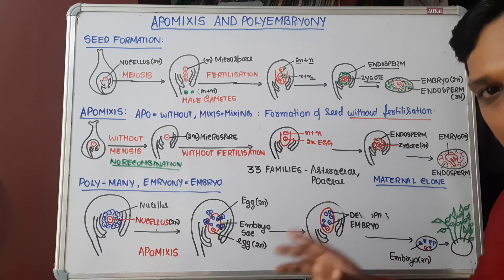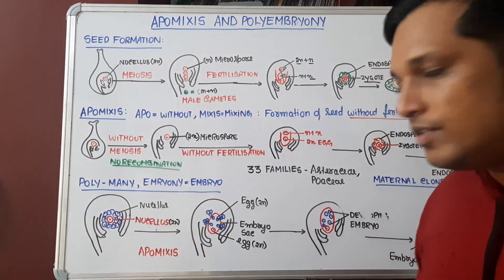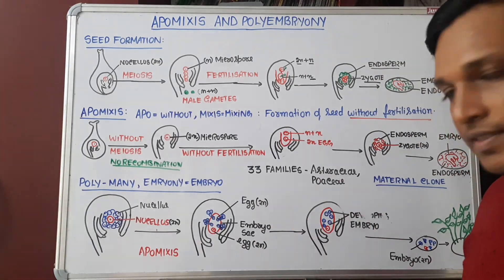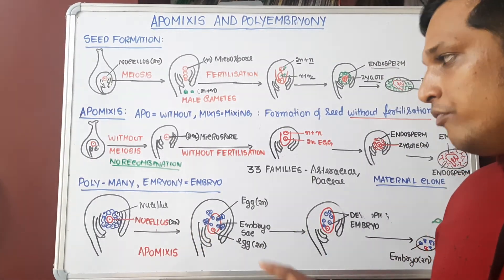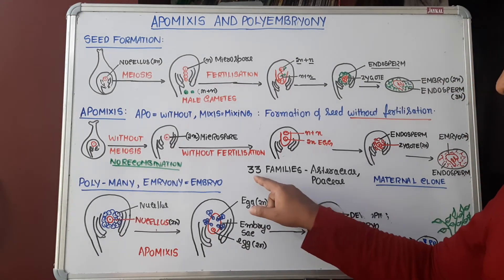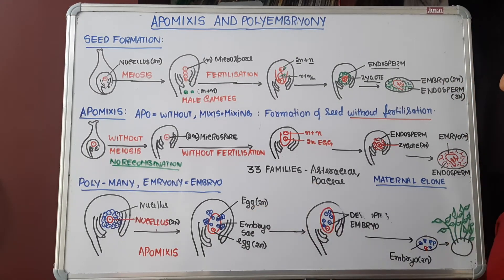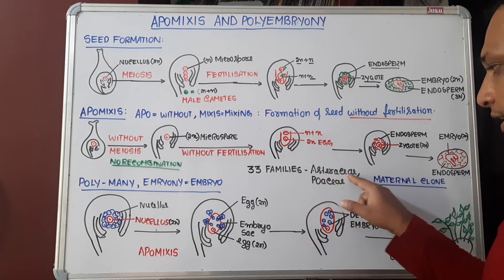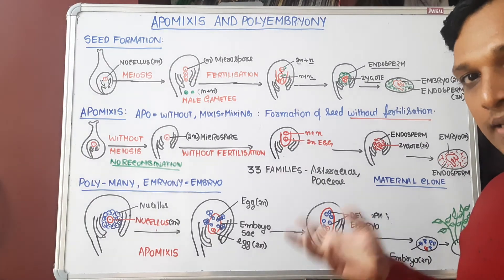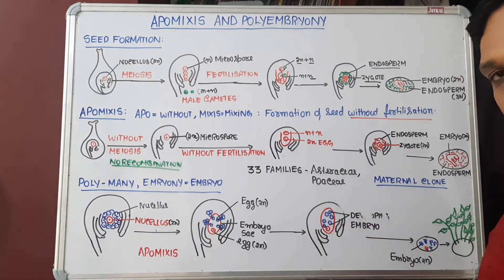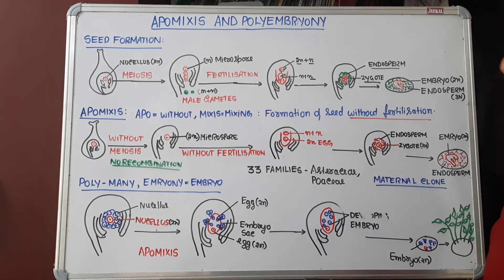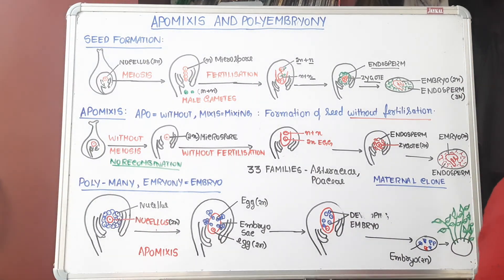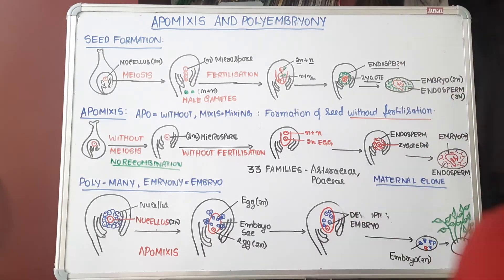Polyembryony is a form of apomixis because there is no meiosis, there is no fertilization, and only one parent is involved — it is a type of asexual reproduction. Apomixis is seen in 33 families, including Asteraceae; Parthenium is an example. Poaceae — grasses — also show this kind of seed development. I hope you have understood, thank you all.